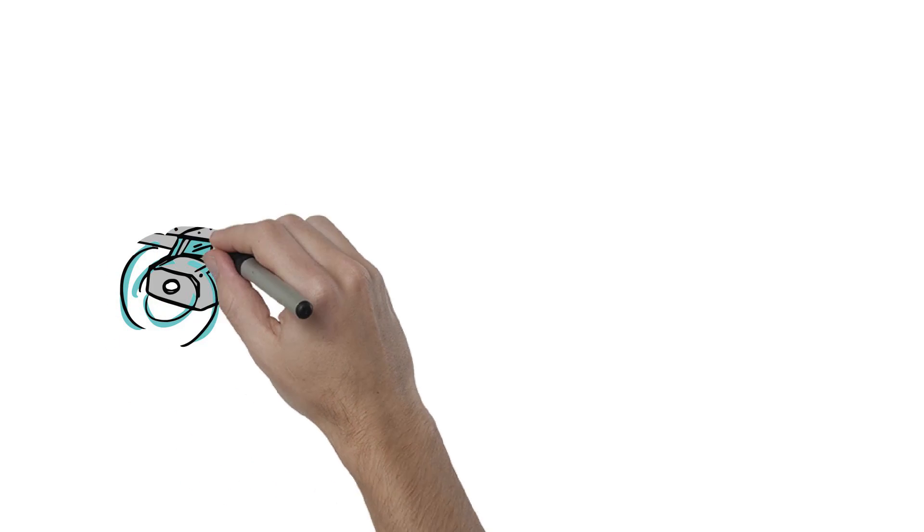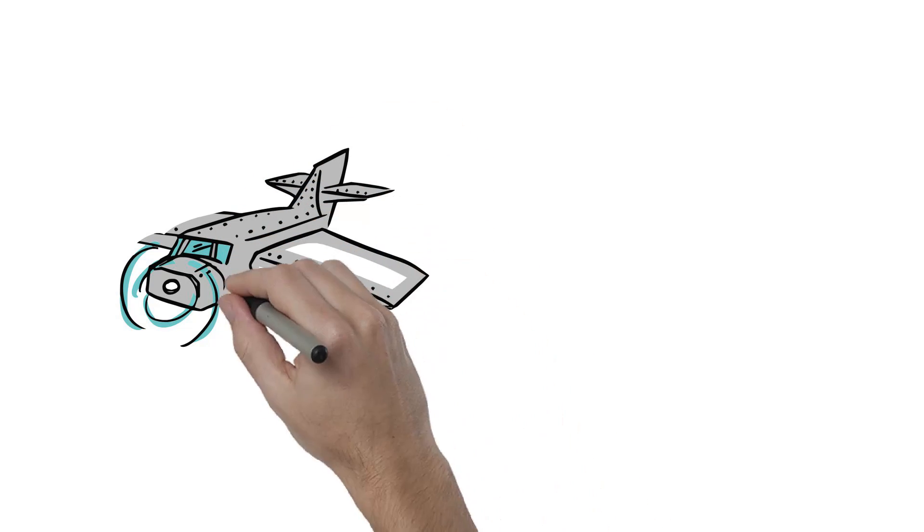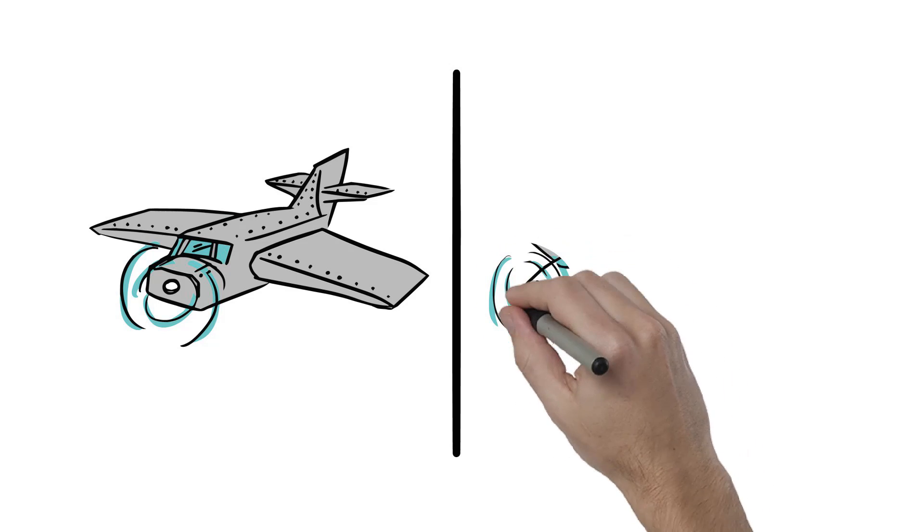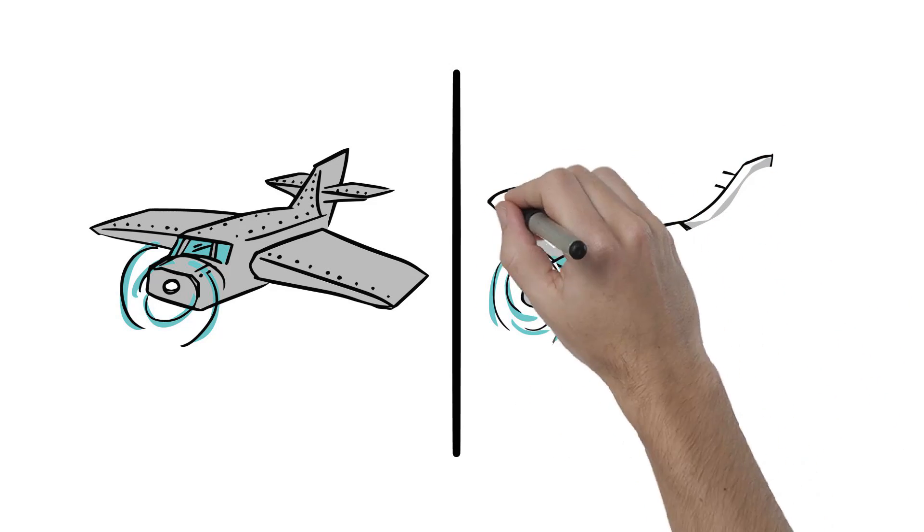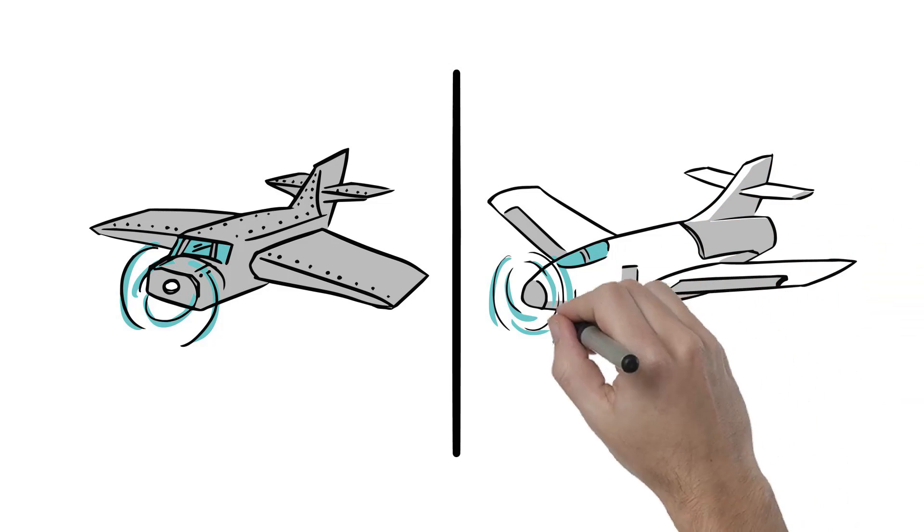You don't want your planes to get shot down by enemy fighters, so you armor them. But attaching armor makes the plane heavier, and heavier planes are less maneuverable and use more fuel. Just as too much armor creates a problem, so does not armoring planes enough.